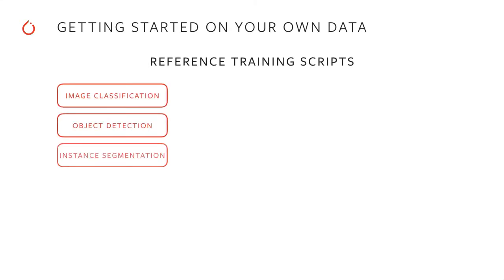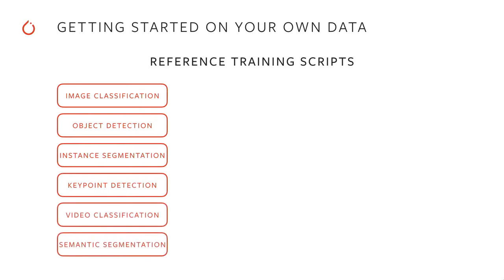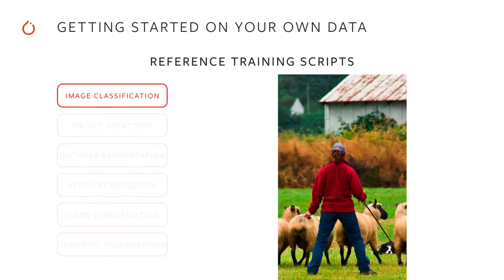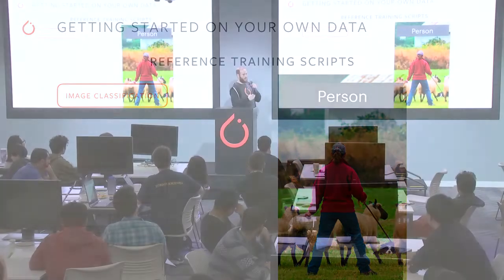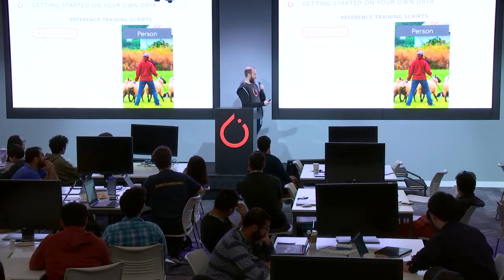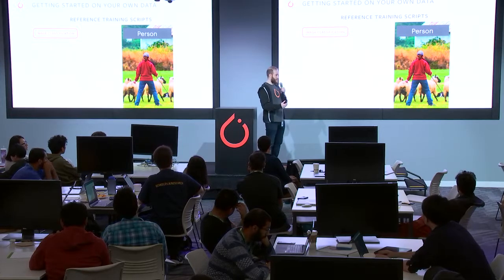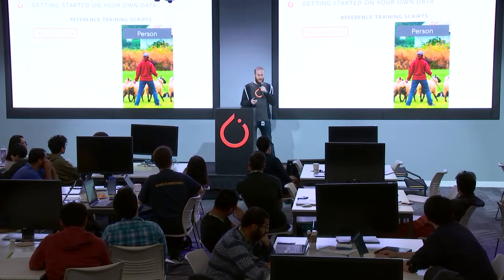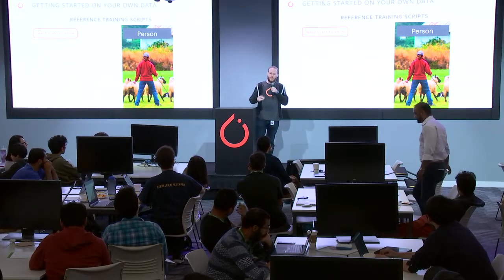I also mentioned reference scripts for training your models. We have a number of training scripts that allow you to start not only from scratch — you get the models, you have the training code, and you just start. We have code for image classification, which allows you to predict the class of an image. These models have been trained on ImageNet, a very large dataset that has been around for a while and helps bootstrap research on computer vision.